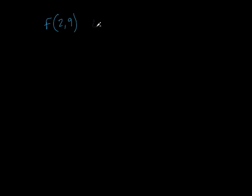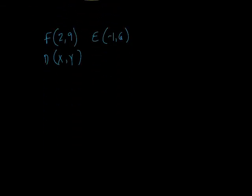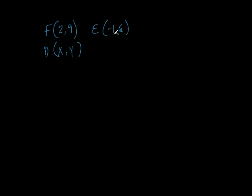So we've got point F is (2, 9) — those are the same points — and E is (-1, 6). We don't know D, so let's put D right here as (X, Y). Since these are the two endpoints, let's put them right next to each other. This is our midpoint and these are our two endpoints. Remember what we did — this was part of our midpoint, so we took the midpoint, multiplied it by 2, and then subtracted the other endpoint from it. So: take the midpoint (-1), times 2 is -2, minus 2 is -4. So that's our X.